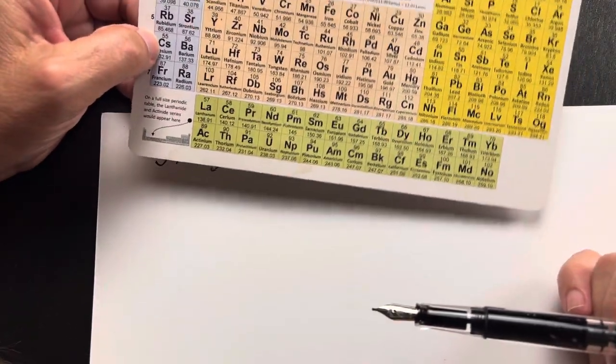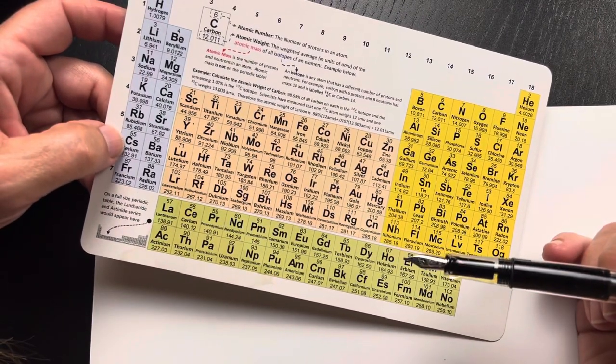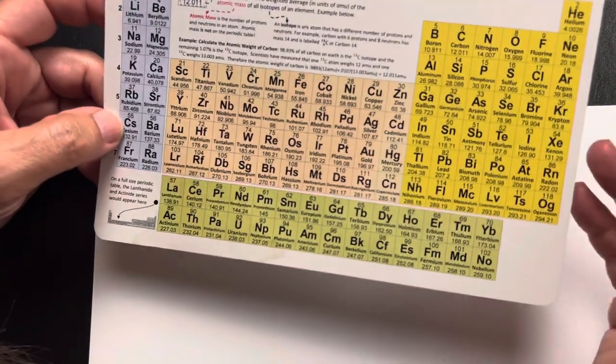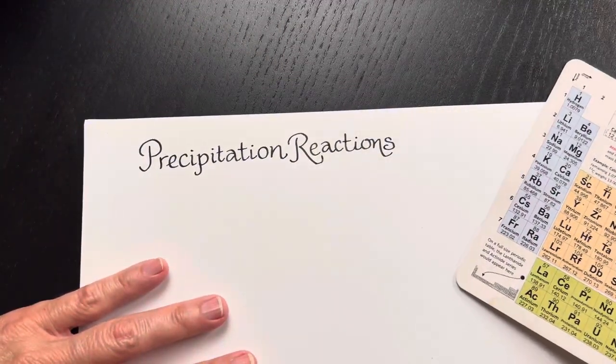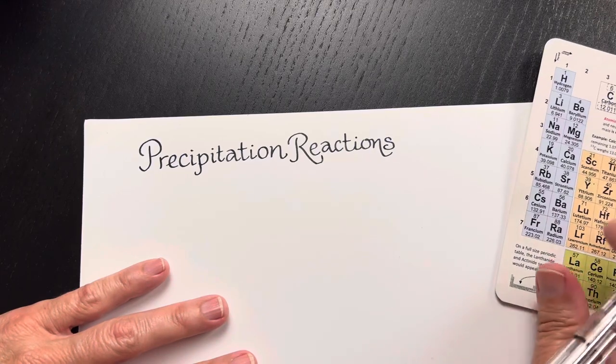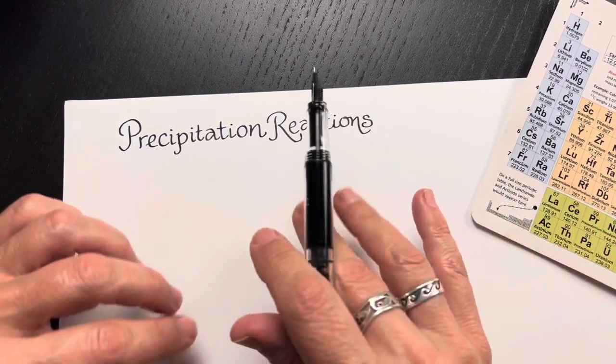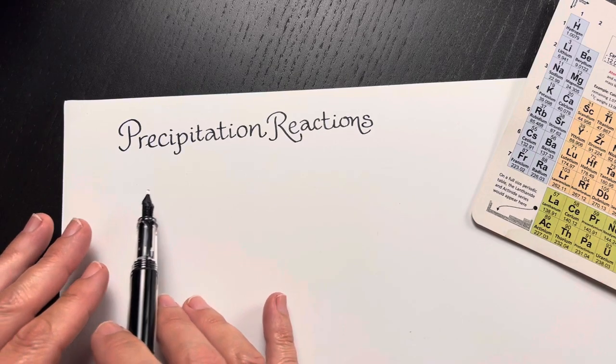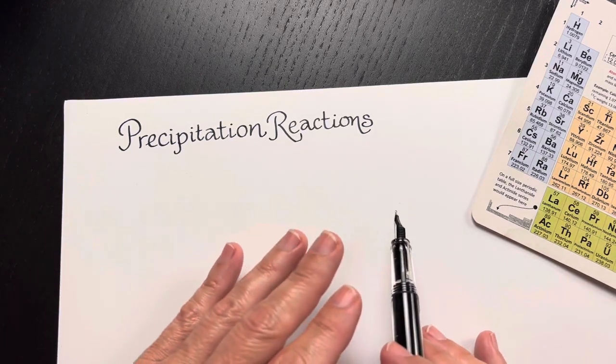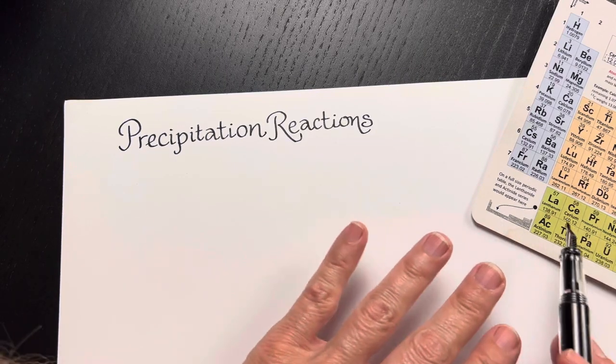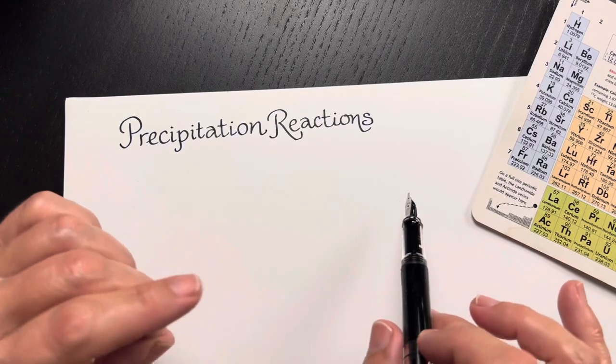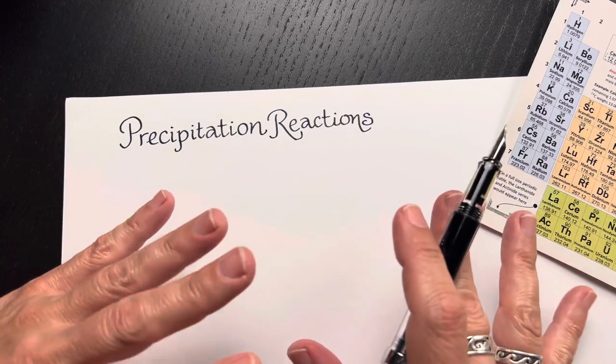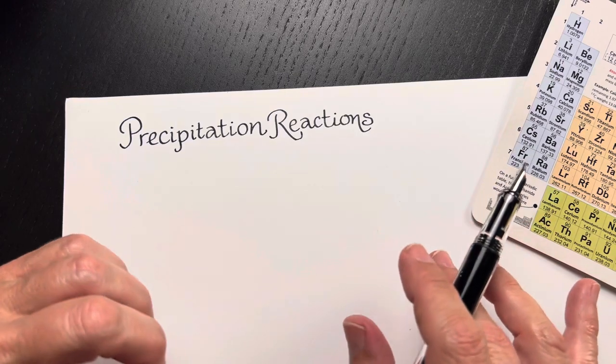Now, when you learn solubility rules, it's like a yes, no - yes, it's soluble or no, it's not. When you first learn solubility rules, that's usually how it's taught. But I do want to warn you that it's not a yes, no. It's a spectrum. As are most things. Some things are extremely insoluble, some are somewhat insoluble, some are slightly soluble, some things are very soluble.